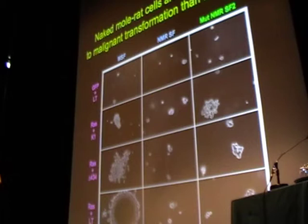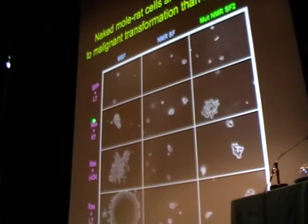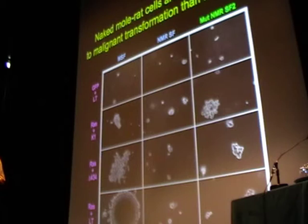Now in naked mole rat skin fibroblasts, none of the conditions can transform the cells. We see only small two-to-three cell colonies. We also performed the same experiment on a mutated naked mole rat fibroblast cell line that has likely silenced P16, and you can see nice transformation even when we just introduce RAS and remove P53 and RB proteins. This means naked mole rat cells are more resistant to oncogenic transformation than mouse cells, and that is probably due to this double control of contact inhibition.